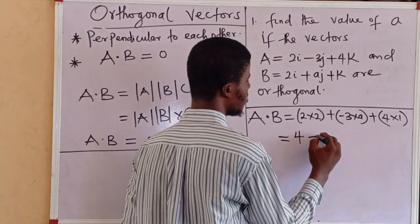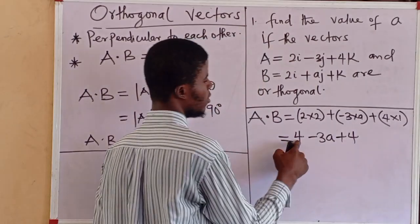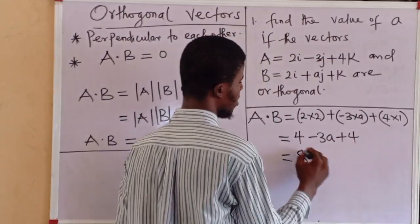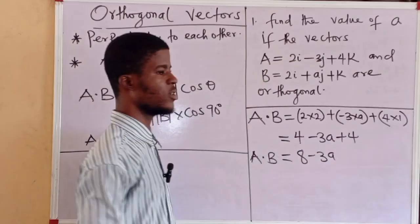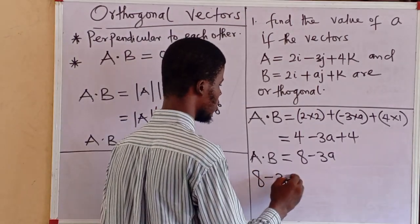Minus 3 times A is minus 3A. 4 times 1 is 4. Okay, 4 plus 4 is 8. That's 8 minus 3A. Since the vectors are orthogonal, it means that their dot product is equal to zero.